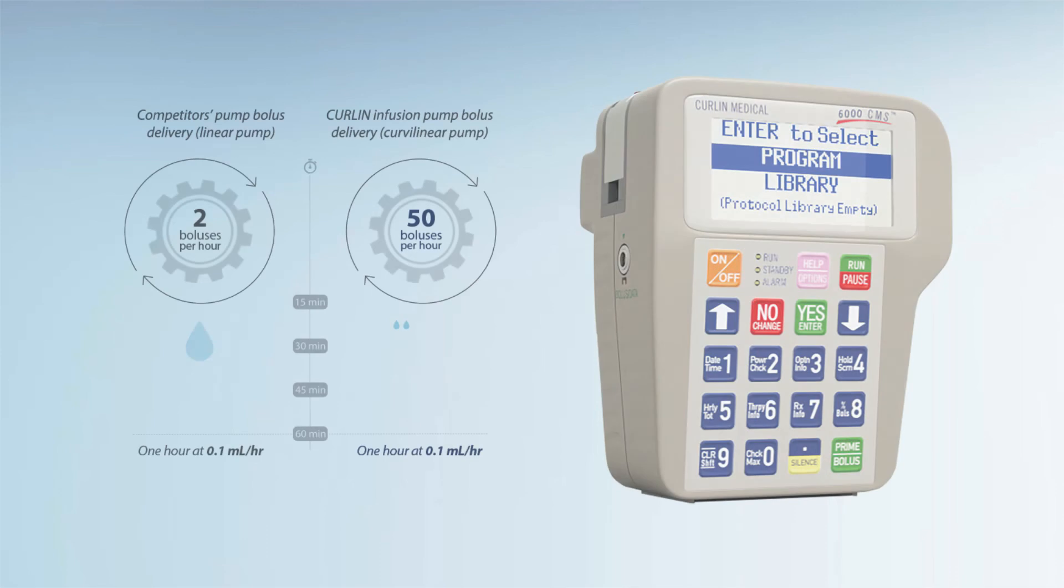Curling ambulatory infusion pumps have been shown to deliver an extremely high resolution and continuity of flow, especially at low infusion rates. For example, at an infusion rate of 0.1 milliliter per hour, the Curling pump delivers 50 micro-boluses per hour.